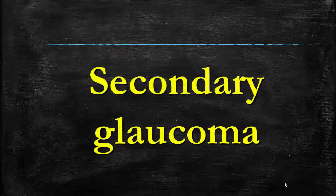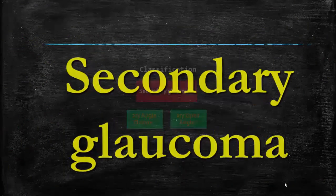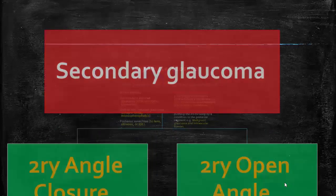Secondary glaucoma. The classification of secondary glaucoma divides it into two types: secondary angle closure glaucoma and secondary open angle glaucoma.